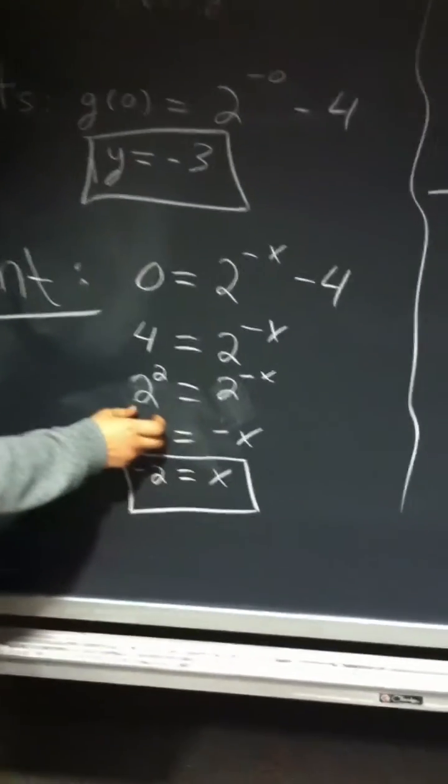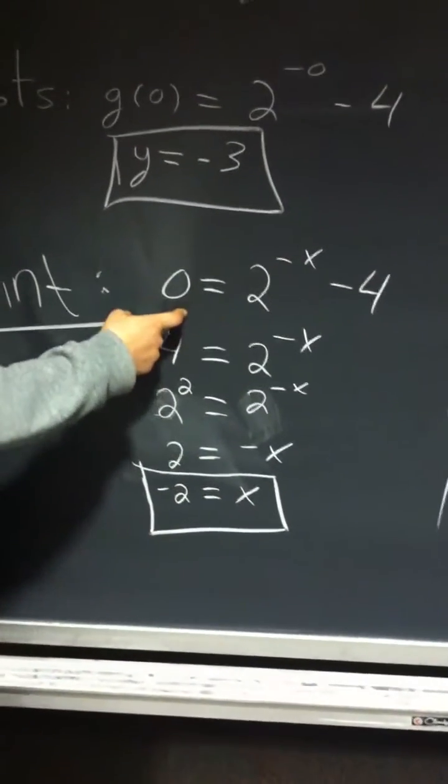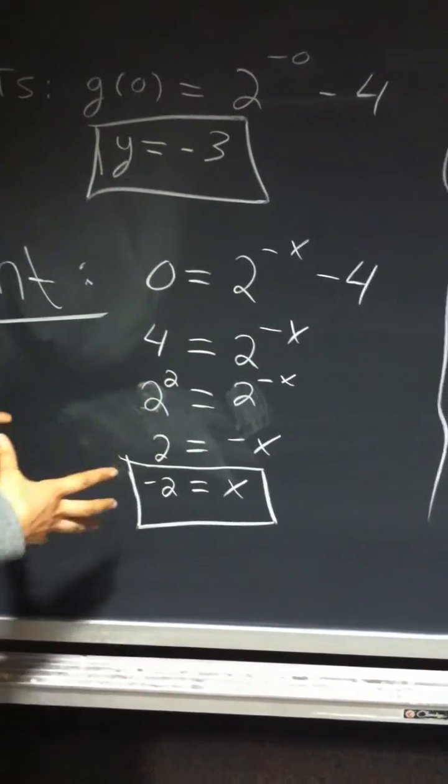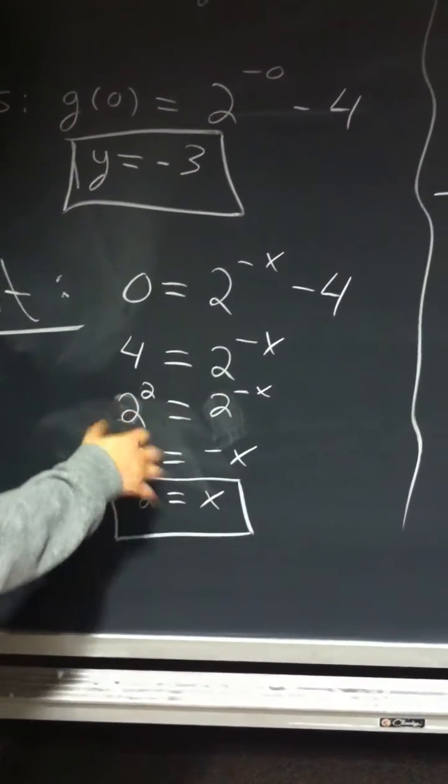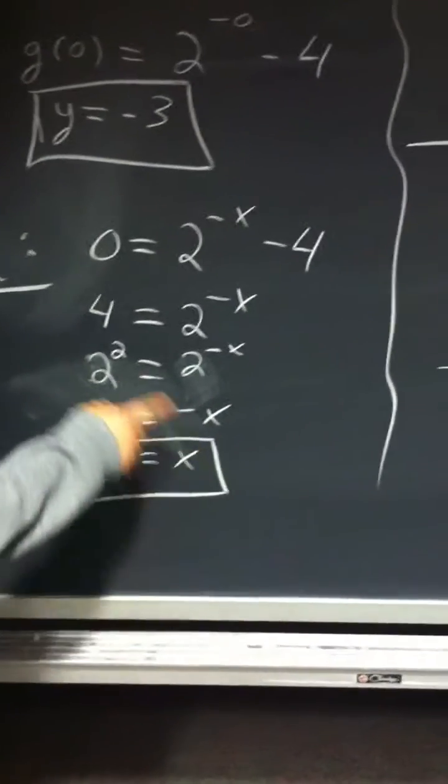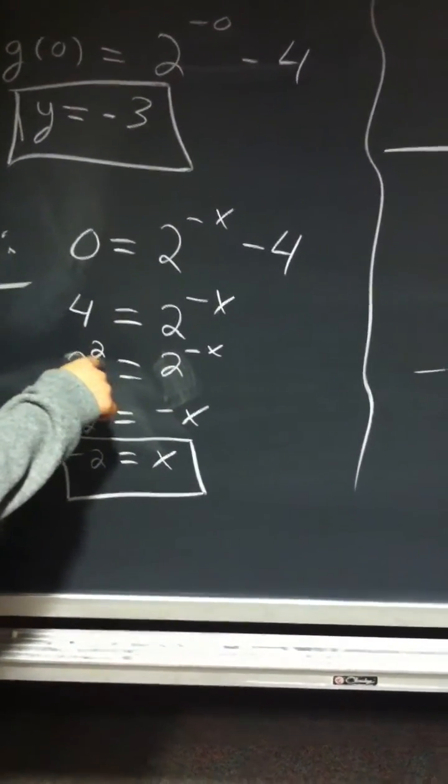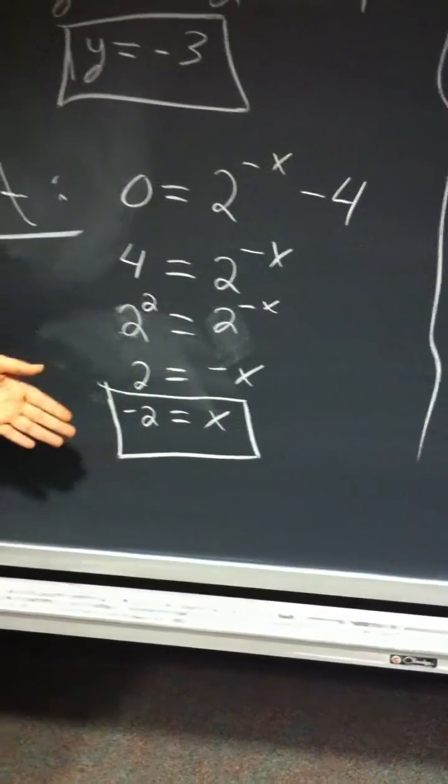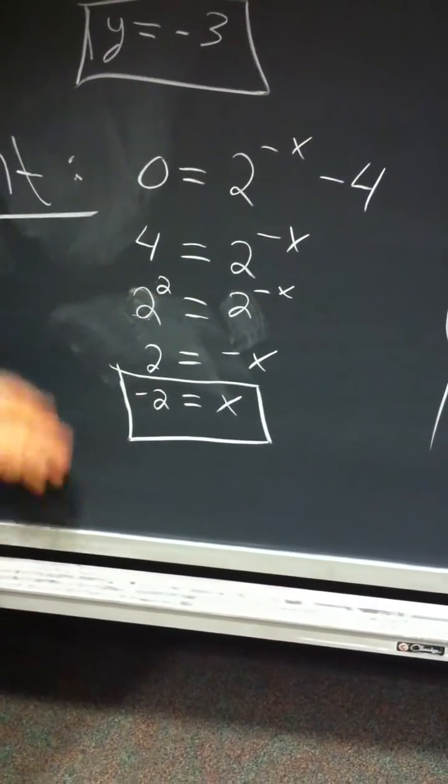And then you're going to want the same base. So you make 2 squared. You're going to get the same bases. And then once you have the same base, you're not going to care about the bases. You're just going to care about the exponents. So it's going to be 2 equals negative x. And you divide by negative 1. So you're going to have negative 2 equals x.